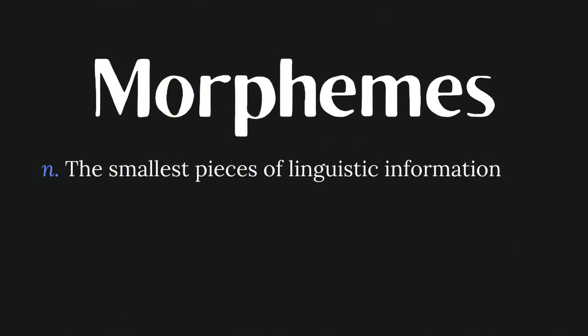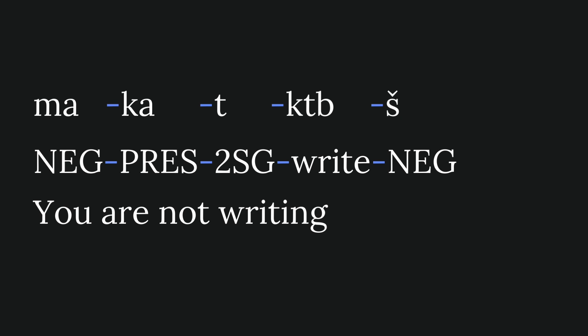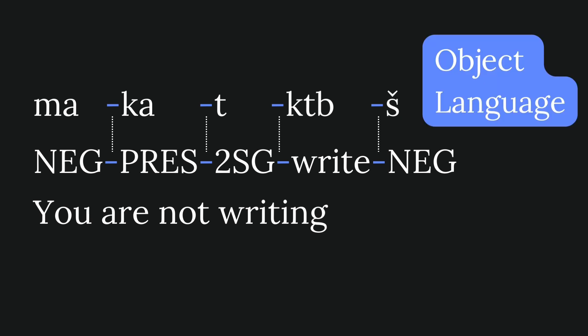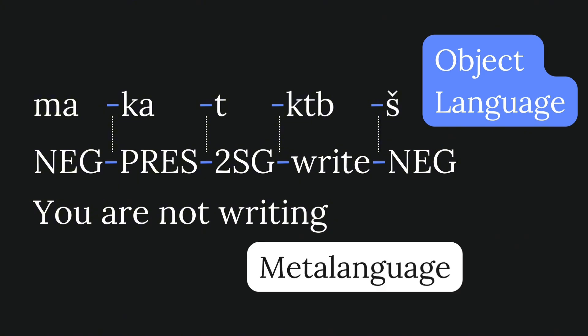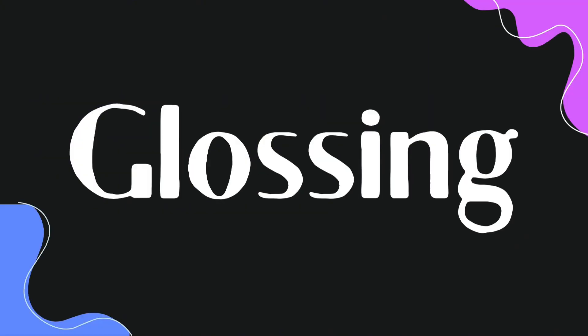Glosses are left aligned with the example, word by word. Morphemes are generally in small caps or capital letters, and roots are in lowercase. Additionally, the language we're talking about is known as the object language — like Spanish or Darija in our case — while the language we're using to describe the object language is known as the meta-language. There are five main symbols you need to know to be able to gloss.